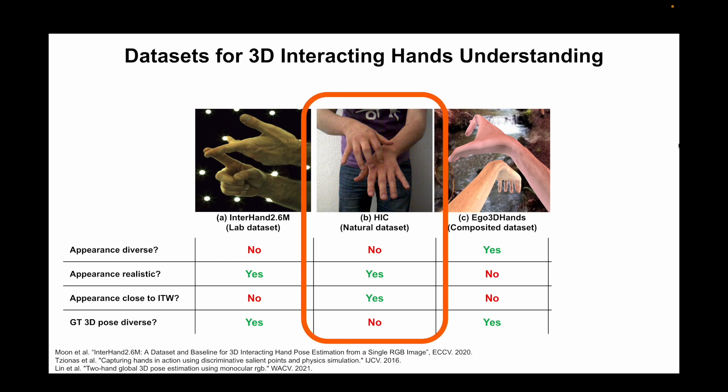The HIC dataset, which belongs to the natural dataset category, provides small-scale real-captured images with 3D ground truth. Although its images have appearances closer to those of indoor-outdoor images than the lab dataset, one downside is that it provides small amounts of less diverse 3D ground truth, because it is captured with only a single or couple of cameras outside of studios.